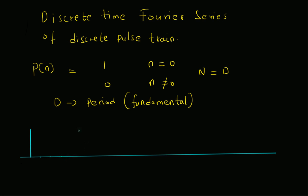Then we have another 1 at n equal to d, followed by d minus 1 zeros, then another 1 at 2d, and so on. So p of n equals 1 only for n equal to 0, d, 2d, and so forth — it is a periodic signal. The value of p of n is 1 at n equal to 0 and 0 otherwise within the fundamental period.